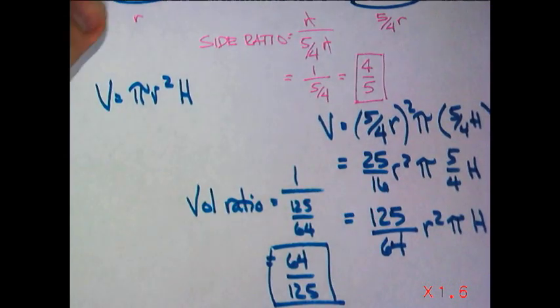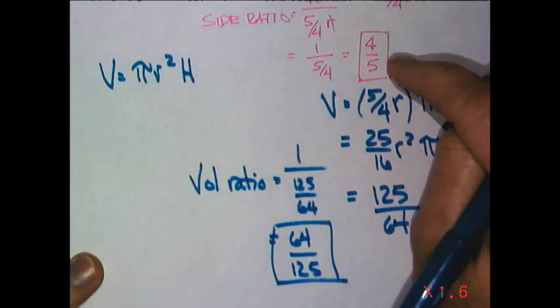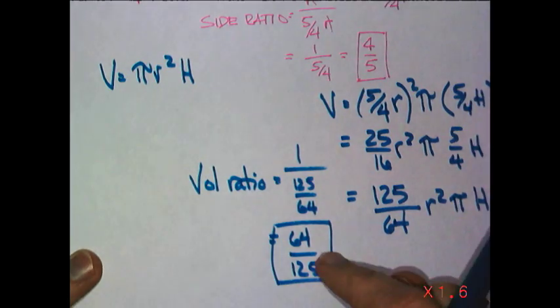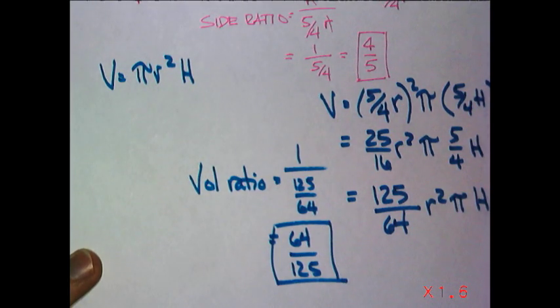And yes, you have noticed a pattern. If the side ratio is 4 to 5, the volume ratio must be 64 to 125. And there is, indeed, a pattern to that, because, of course,